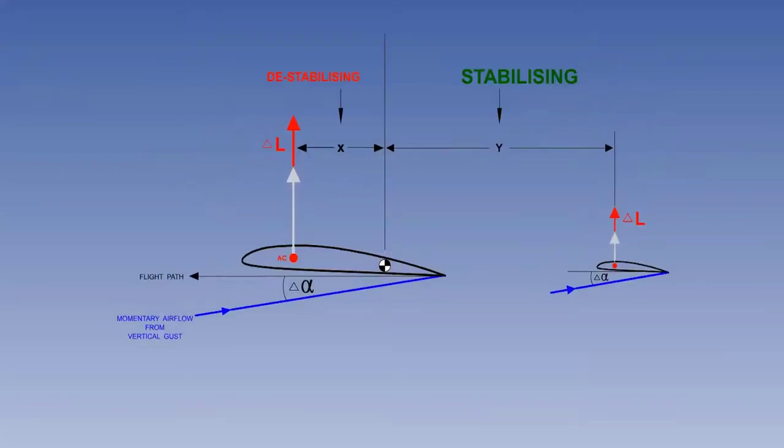The fore and aft position of the centre of gravity will have a significant effect on longitudinal static stability. The illustration shows a centre of gravity position at which the stabilising tail moment is bigger than the destabilising wing moment. The aircraft will have some measure of longitudinal static stability.